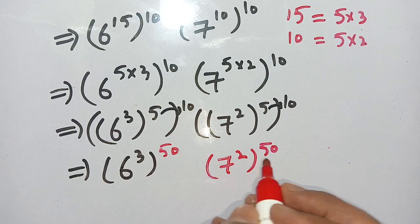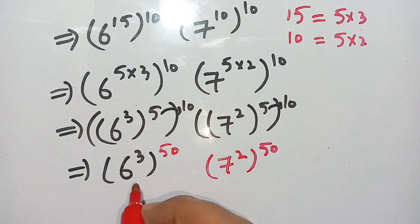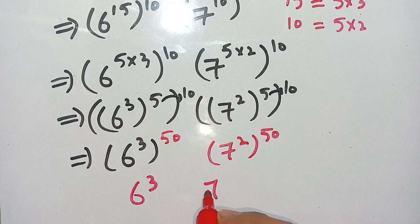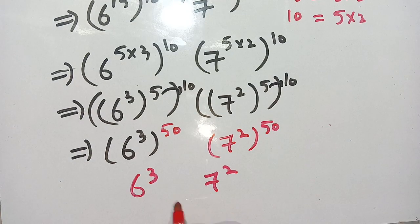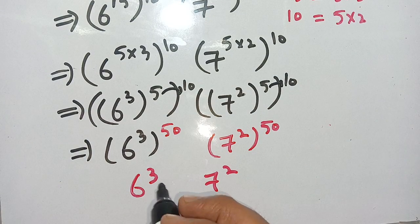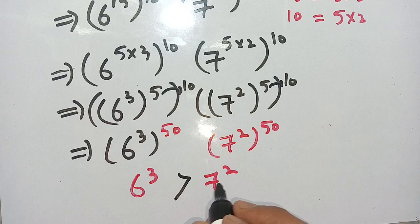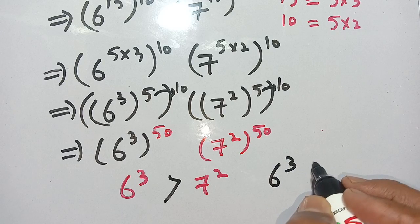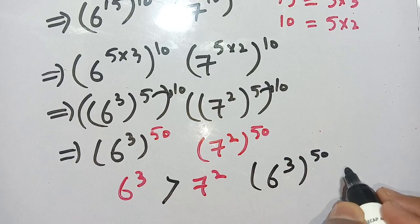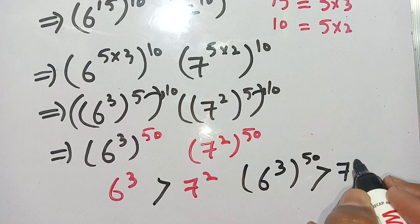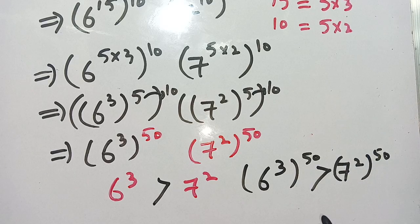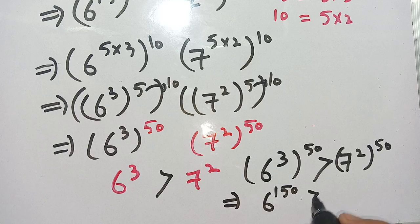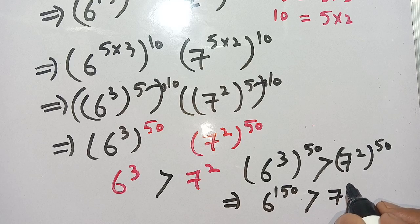Now both expressions have the same outer power of 50, so we compare the bases: 6^3 versus 7^2. We can see that 6^3 = 216 is greater than 7^2 = 49. Therefore (6^3)^50 is greater than (7^2)^50, which means 6^150 is greater than 7^100.